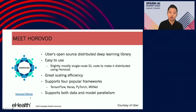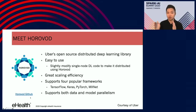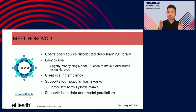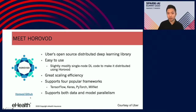In the data parallelism approach, we are essentially training the same model on different processing units, but feeding different parts of the data to each unit. In model parallelism, you train on the same data but split the model into different parts and fit them into different processing units. In most cases, you can fit your model into one GPU but not the data, so data is more likely to be the bottleneck. In this talk, we're focused on data parallelism.